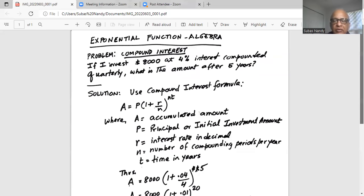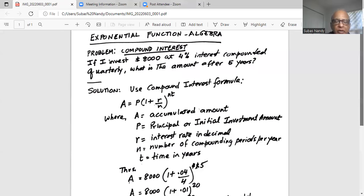So with this formula, let's apply what we have in this problem. My principal or the initial investment amount is $8,000, so P is $8,000, times in parenthesis 1 plus my rate of interest is 4%. In decimal 4% is 0.04 and it is compounded quarterly. There are four quarters in a year, so my n which is the number of compounding periods per year is 4. So 0.04 divided by 4. Close the parenthesis.